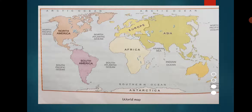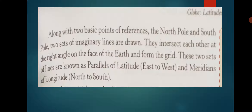With the help of the globe, you can see the world map showing important lines of latitudes and longitudes. Along with the two basic points of reference — the north pole and the south pole — two sets of imaginary lines are drawn. They intersect each other at right angles on the face of the earth and form a grid. These two sets of lines are known as parallels of latitudes and meridians of longitudes.